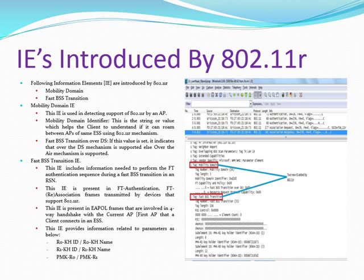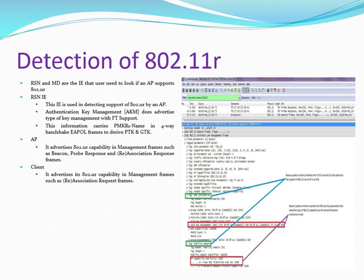11r introduced two new information elements, in addition to enhancements in existing information elements. The new information elements are the Mobility Domain Information Element and the Fast BSS Transition Information Element. The Mobility Domain IE provides information related to the mode of 11r and the mobility domain name, whereas the Fast BSS Transition IE provides information related to parameter exchange that happens in the regular four-way handshake with 11r parameters.